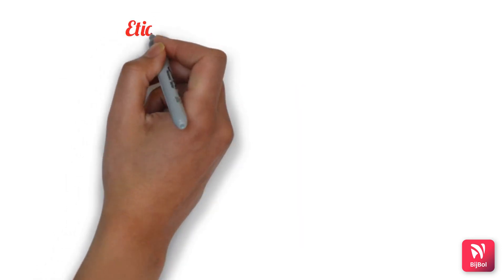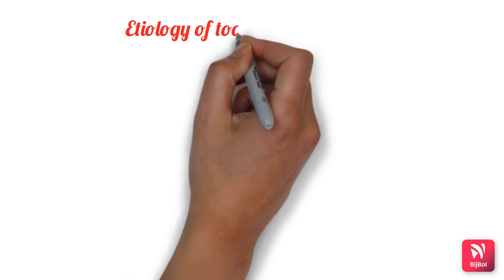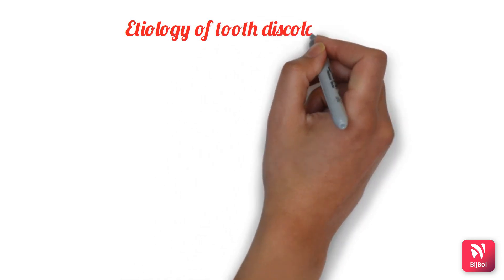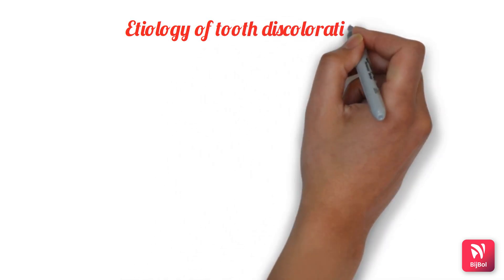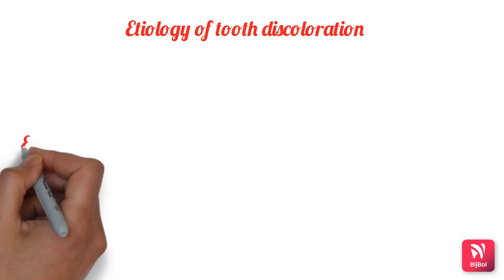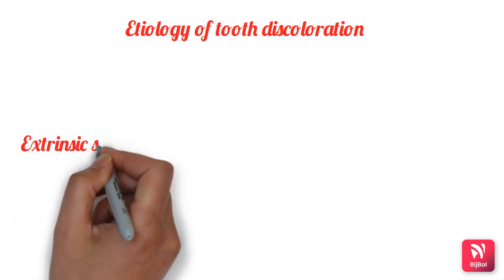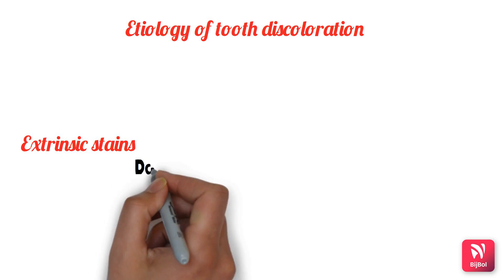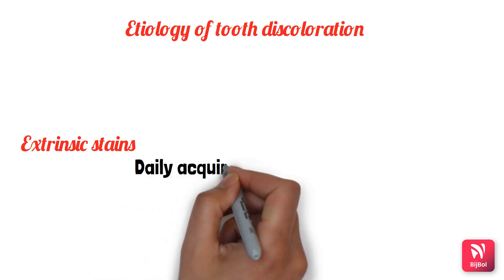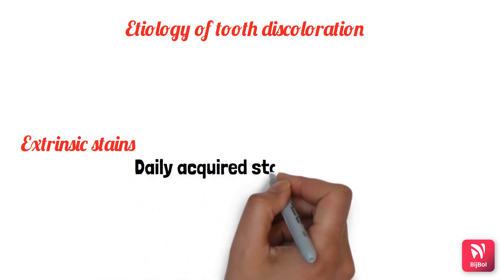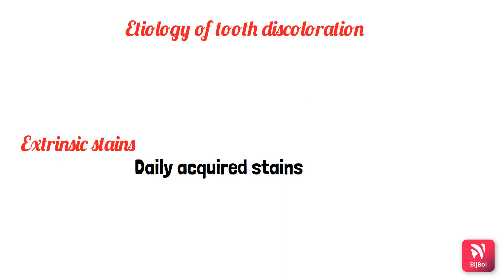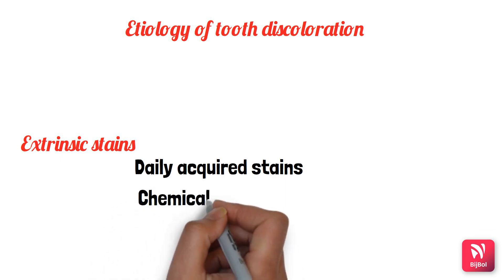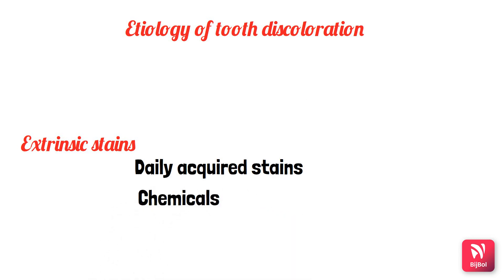Coming to the etiology of tooth discoloration, tooth discoloration refers to any change in the color or translucency of a tooth due to extrinsic or intrinsic factors. Extrinsic factors may include external deposits on the tooth surface derived from highly colored foods or drinks, such as coffee, tea, sugar, carrot juice, or oranges.